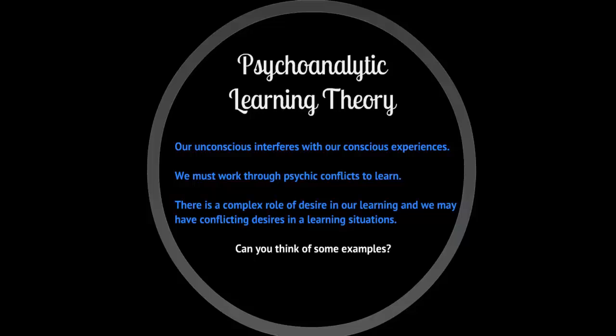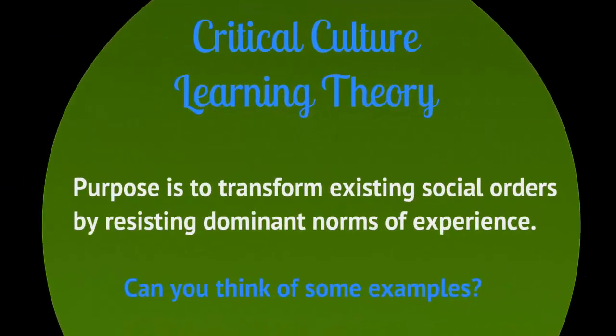Critical culture learning theory says the purpose of the learning experience is to transform the existing social order and resist dominant norms. If a work environment isn't working, the goal is to change conditions for workers. A historical example would be segregated schools — a social order that wasn't working anymore, so people resisted the dominant norm of experience.